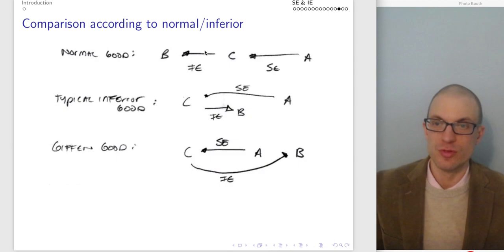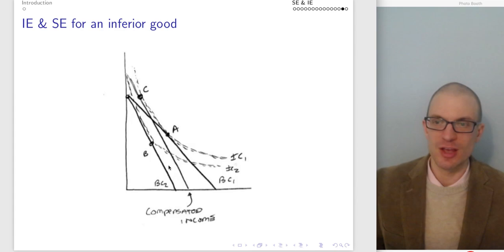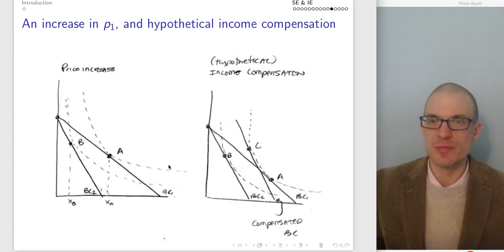Relative to these pictures: the normal good is captured by this image, the inferior good is captured by this image, and the Giffen good is captured by this image. That collection of five slides are the most important from this slide deck. I'm going to go ahead and conclude here — I sure hope you enjoyed the video, and I'll see you next time.